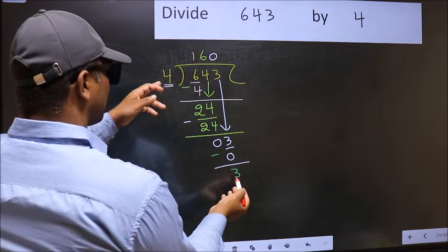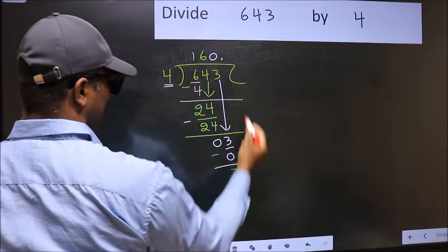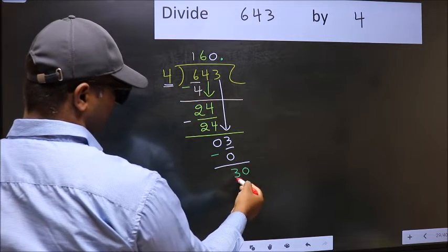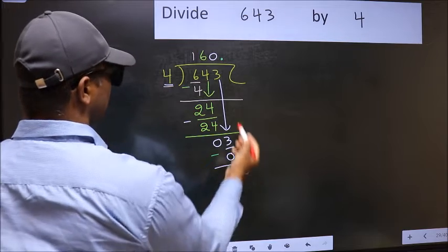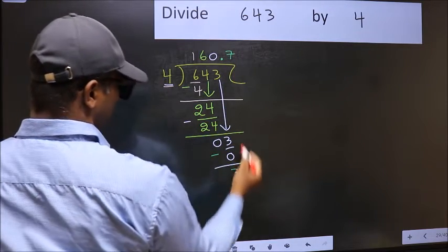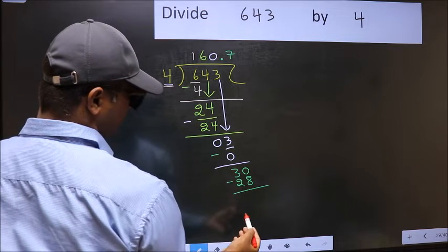3 is smaller than 4, so now you can put a dot and take 0, so 30. A number close to 30 in the 4 table is 4 times 7 equals 28. Now you should subtract 30 minus 28 equals 2.